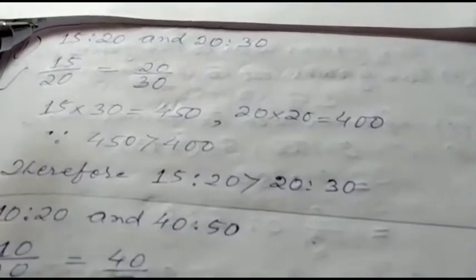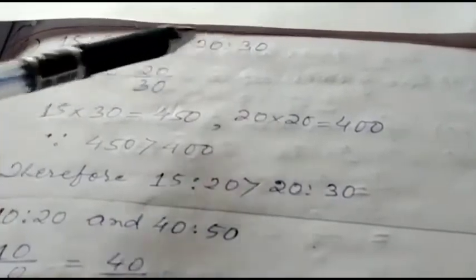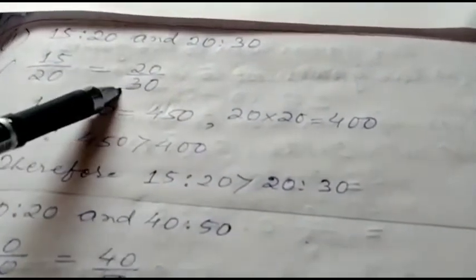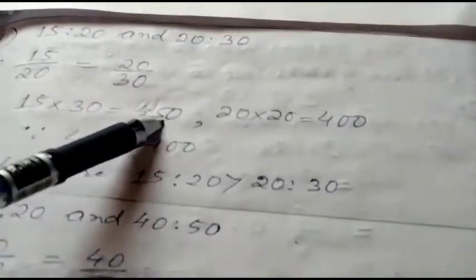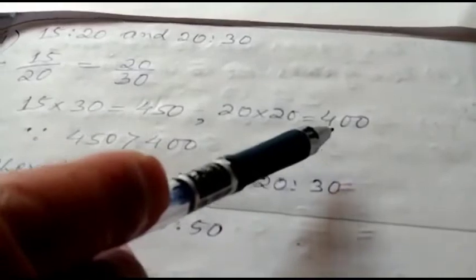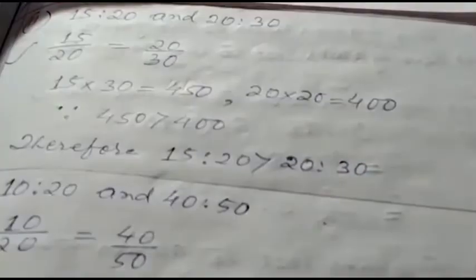15 is to 20 as 15 by 20, and 20 is to 30 as 20 by 30. Let's cross multiply: 15 into 30 first—15 30s are 450—and 20 into 20—20 20s are 400. Since we see 450 is greater than 400, our left-hand side ratio, 15 is to 20, is greater than 20 is to 30.